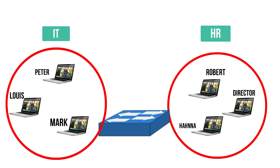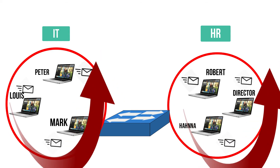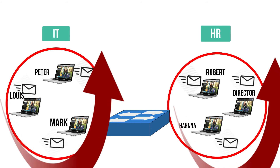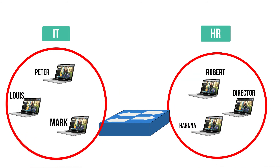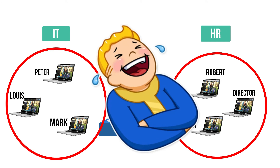And finally, the broadcast communication example. This type of communication is basically used for networking protocols. Network protocols use broadcast communication to perform some specific tasks. But this is something out of the scope of this basic course.